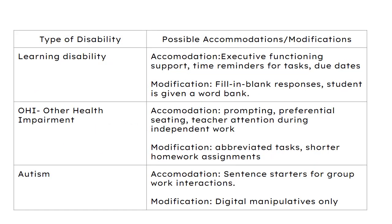Learning disability is the most prevalent disability on an IEP — about 35% of US students who are classified with an IEP have a learning disability. For accommodations, a student like this may have issues with executive functioning, which includes skills like prioritizing assignments and time management. You may have a timer for a specific task to help the student with a learning disability complete work on time, or extra reviews and reminders for upcoming due dates. For modifications, if you're doing a fill-in-the-blank or vocabulary-based question, this particular student may be given a word bank while others may not.